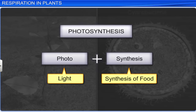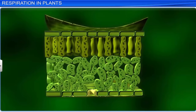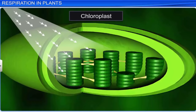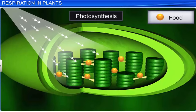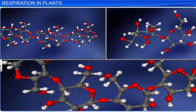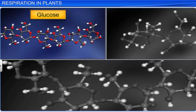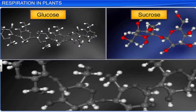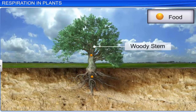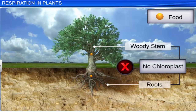Green plants and cyanobacteria are the only organisms that can synthesize their own food using photosynthesis. They are the food source of the world, as animals either directly or indirectly depend on them for food. The superficial layers of plants contain cells that possess chloroplast, which aids in trapping sunlight to manufacture food. In this process, light energy is converted into chemical energy and stored in the bonds of carbohydrates like glucose, sucrose, and starch. All other non-green parts such as woody stem and roots don't have chloroplast, and hence they have to be supplied with food from leaves.